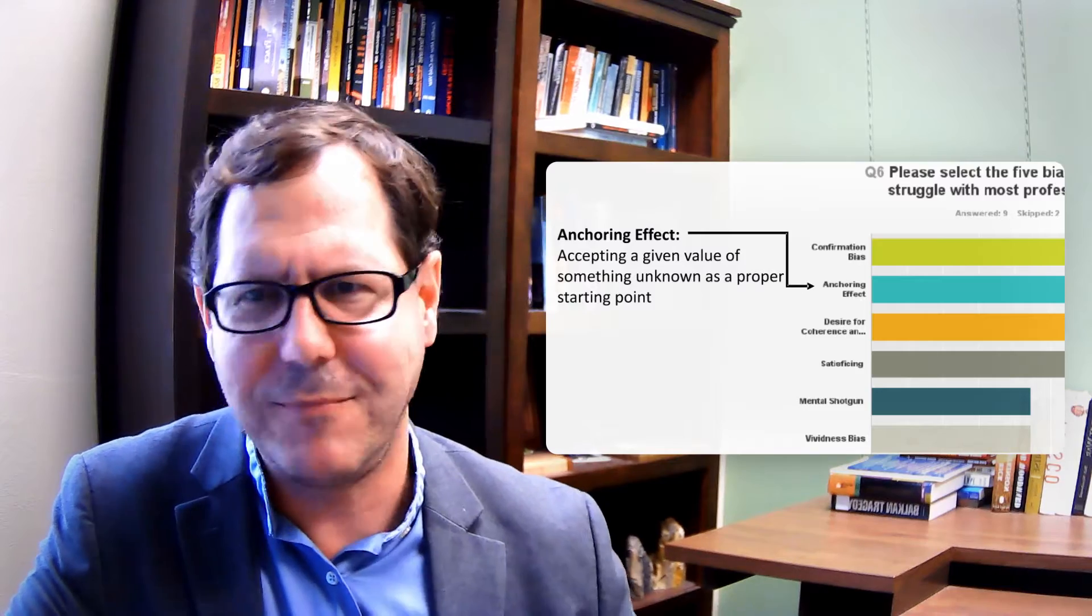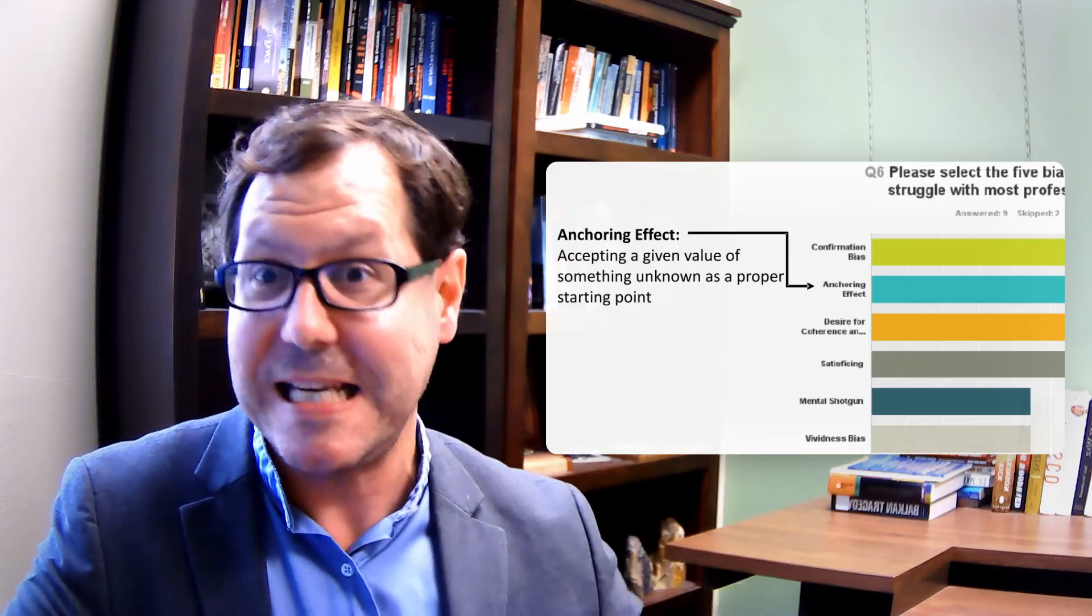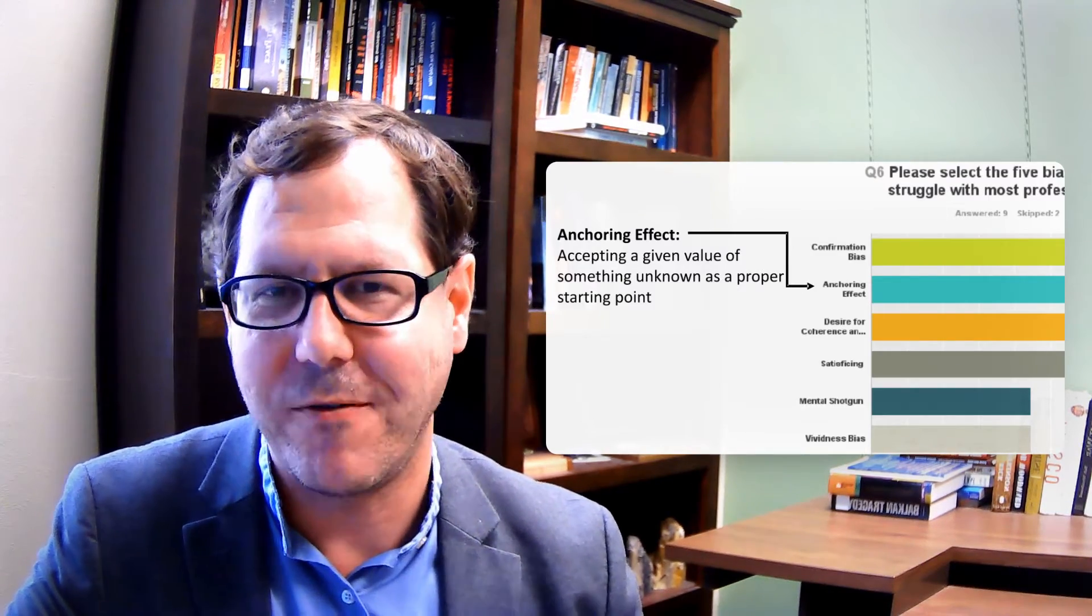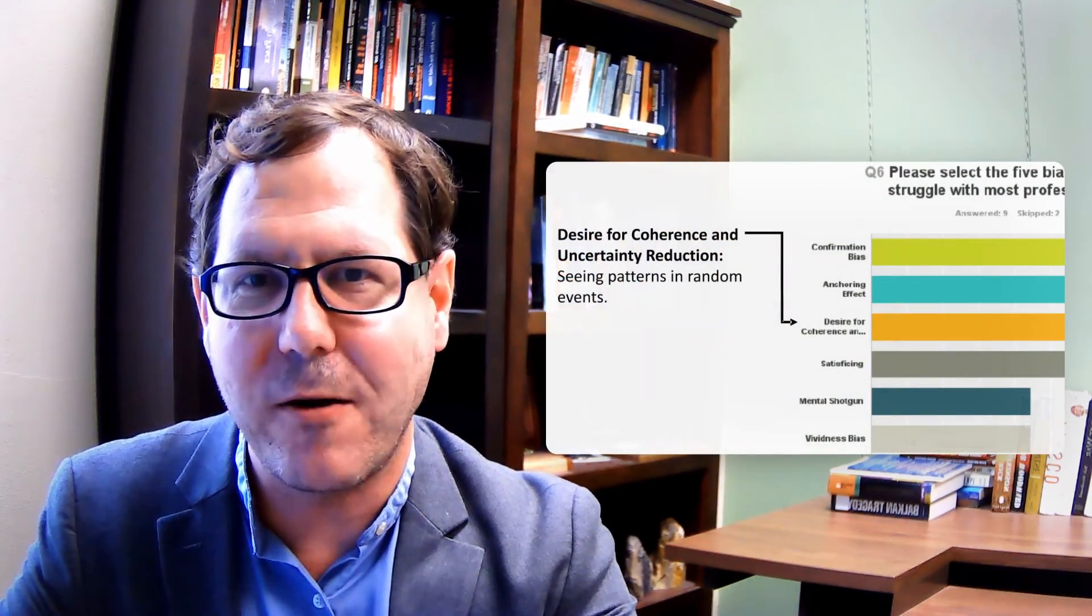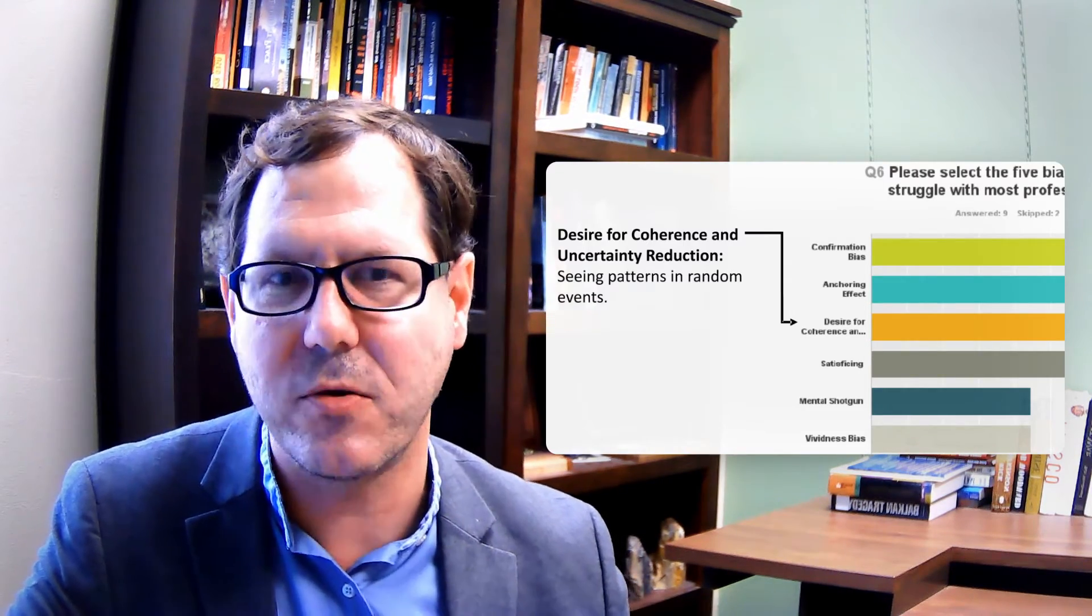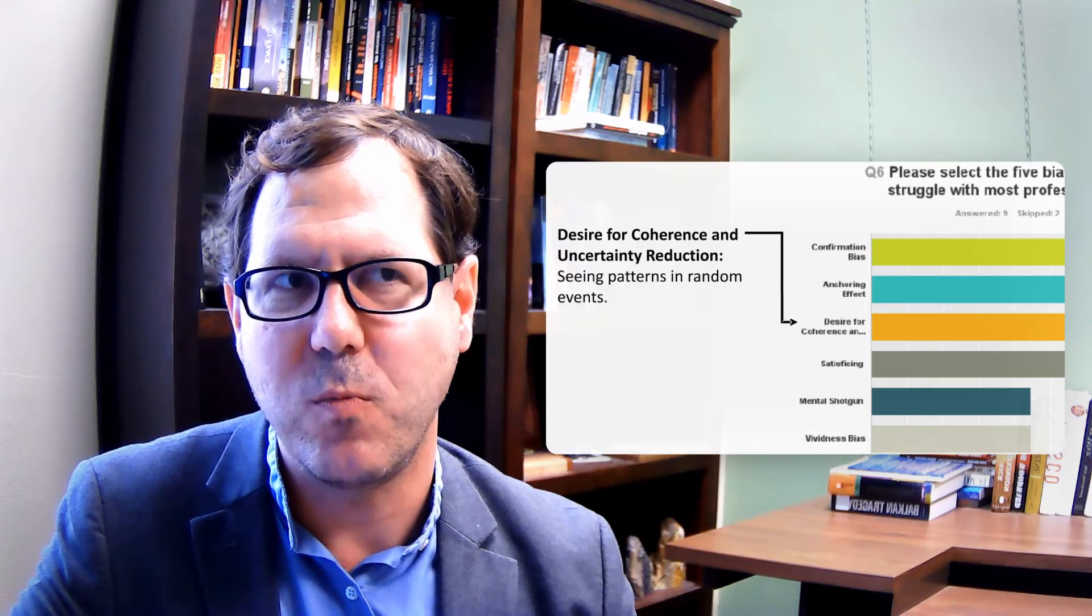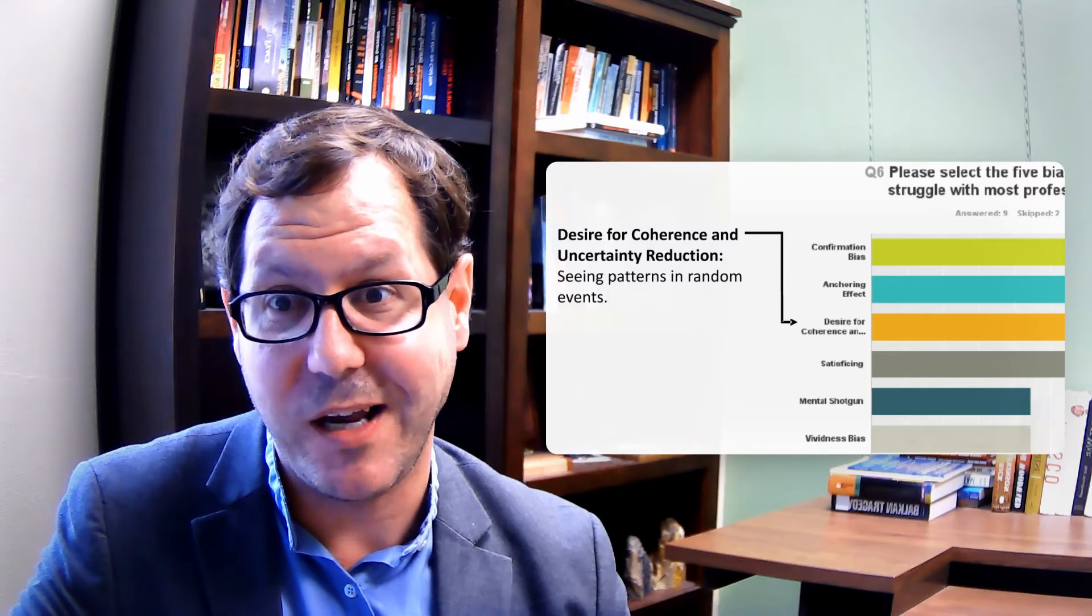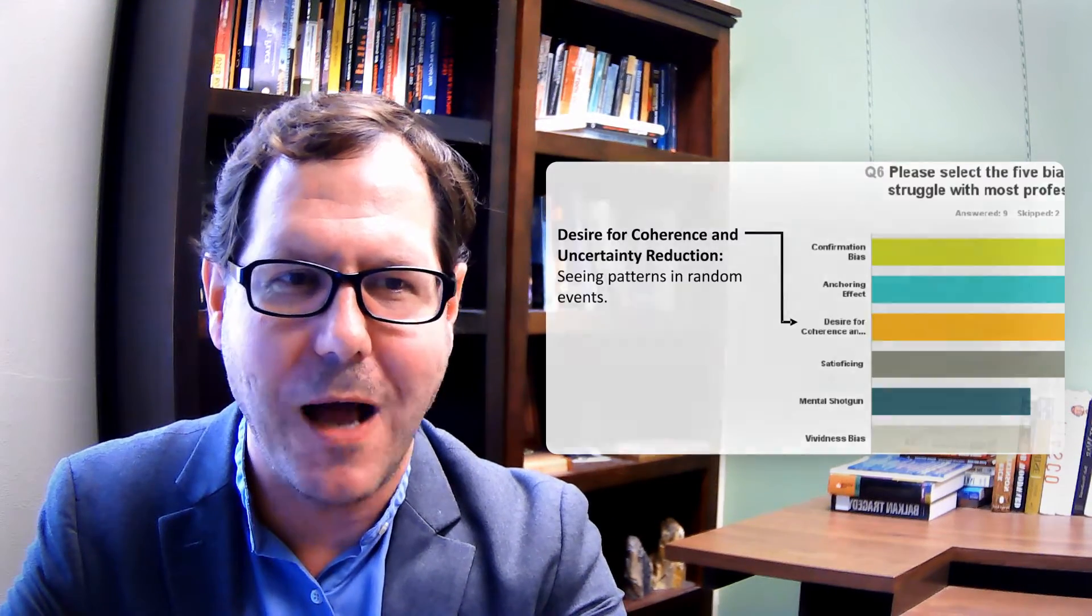This shows up in intelligence analysis as well. You don't necessarily know the likelihood of something, so if you see another piece of information, that piece anchors you and you build off of that, even though that initial information may not have been accurate. There's also the desire for coherence and uncertainty reduction. We are pattern recognizers and assume there's order and structure, so it's easy for us to map meaning onto randomness and assume intentionality where there's not.